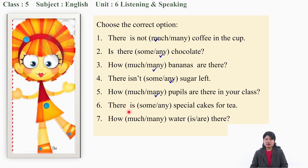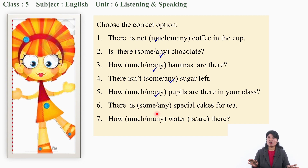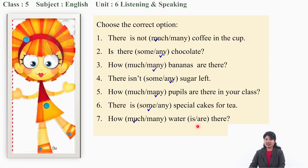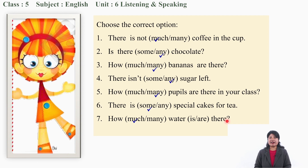Number six: 'There is some/any special cakes for tea.' The right option is 'some' - there is some special cakes for tea. Number seven: 'How much/many water is there?' The right answer is 'much.' We say: 'How much water is there?'